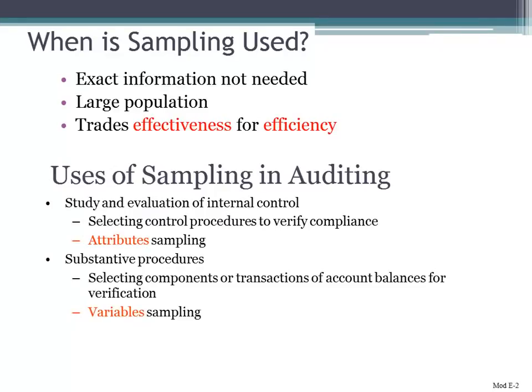So when is sampling used? As auditors we cannot look at 100% of the items, so we have to make a sample selection. There are numerous ways that you can do that, but you want to perform that sampling selection so that the sample is representative of the population. You want to reduce your risk that you won't select those items that are more problematic, or that you missed something. There is going to be this risk that we don't catch something because we're not looking at 100% of the items, so we're trying to minimize that.